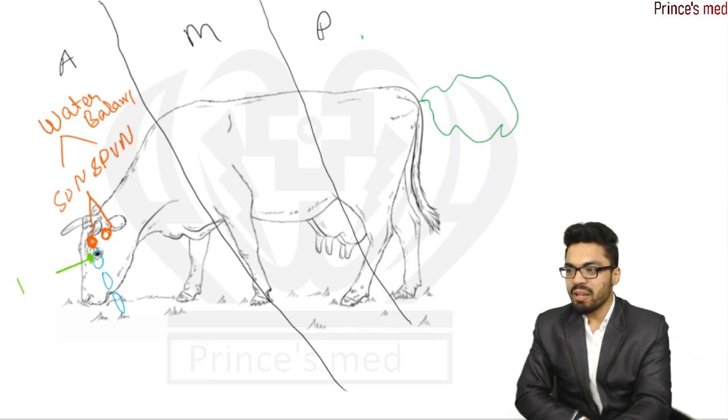Near thigh we have pre-optic nucleus, and thigh resemble lust, so it has function of gonadotropin releasing hormone, means related to gonads.